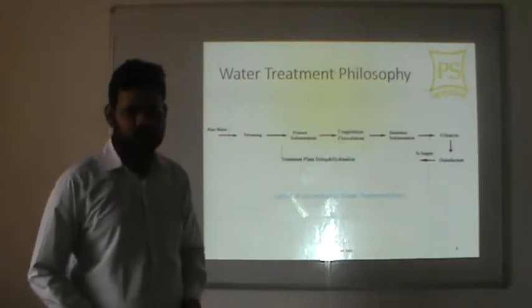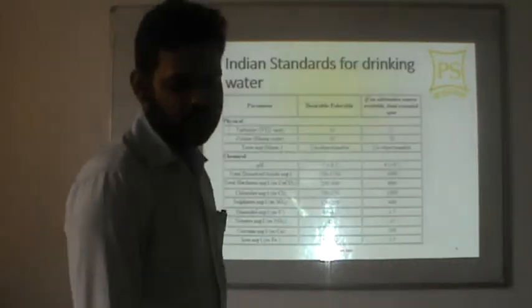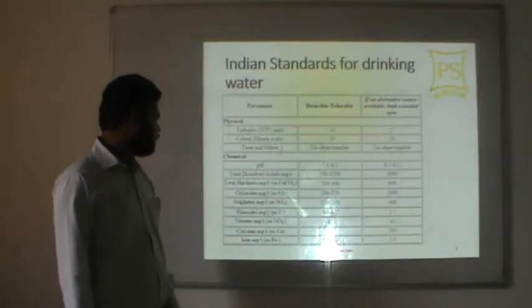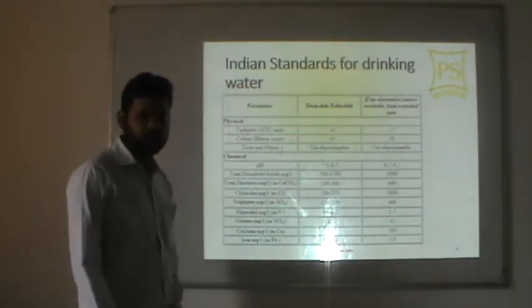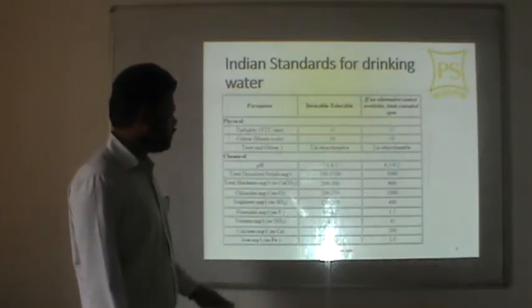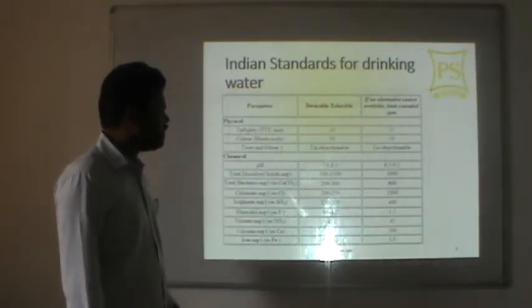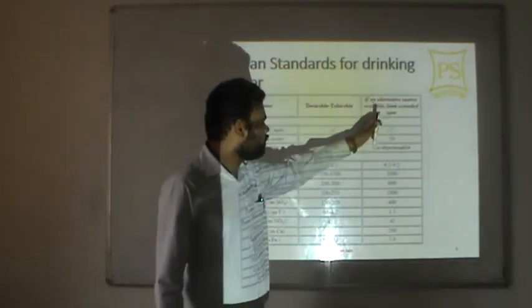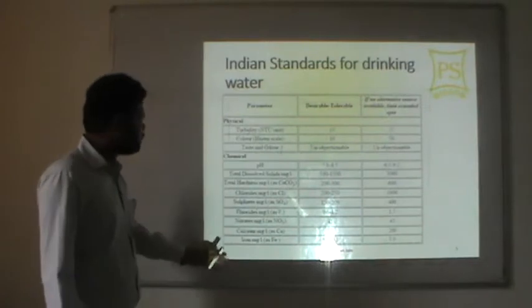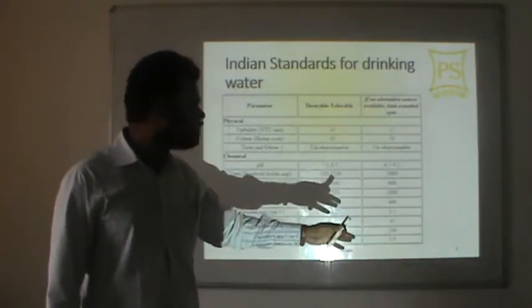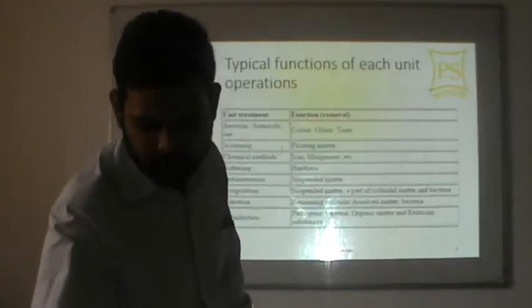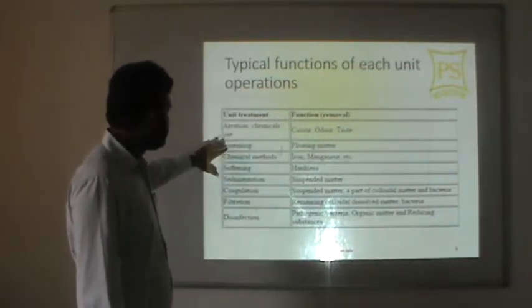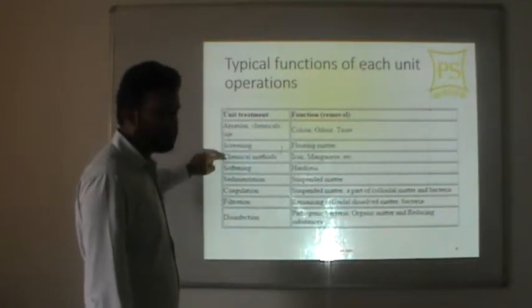We also reviewed the Indian standards for drinking water. There are different parameters: turbidity, color, and chemical parameters such as pH, which has a desirable range of 7.0 to 8.5. The table provides desirable and tolerable limits, including values for situations where no alternative sources are available.